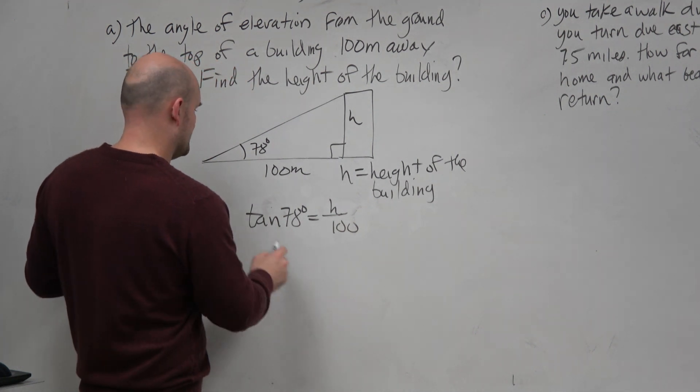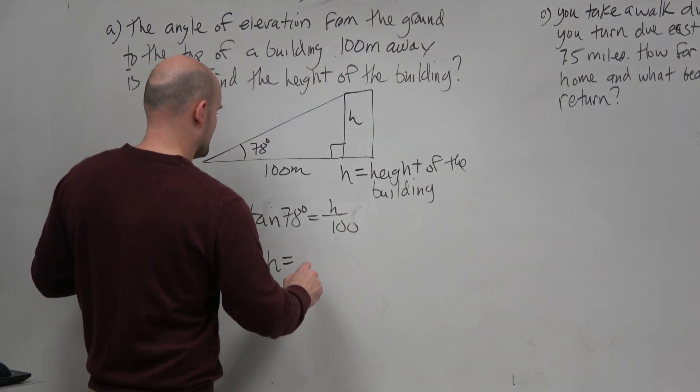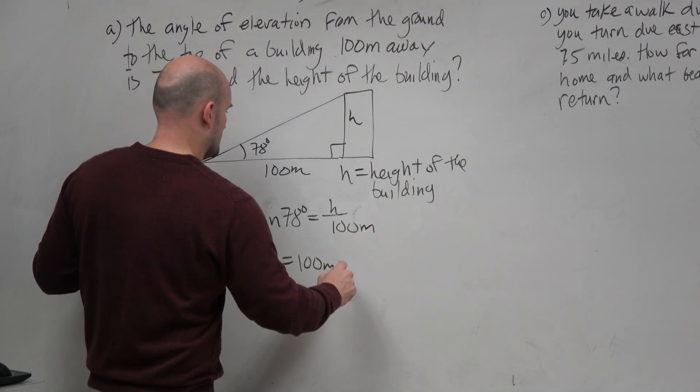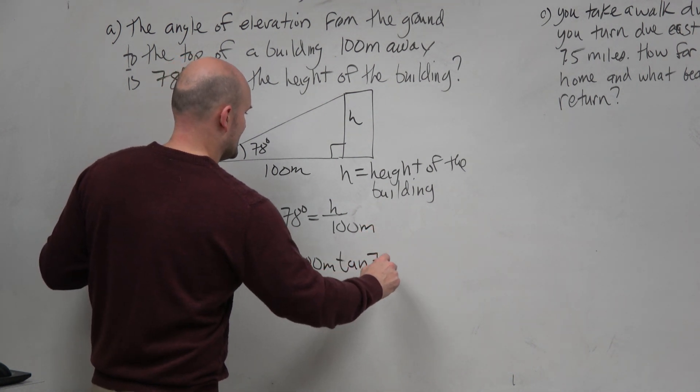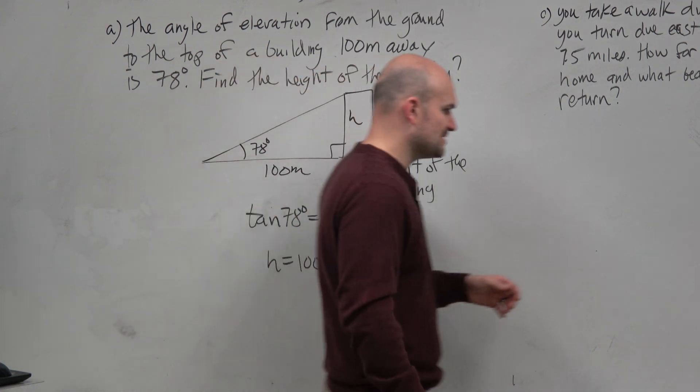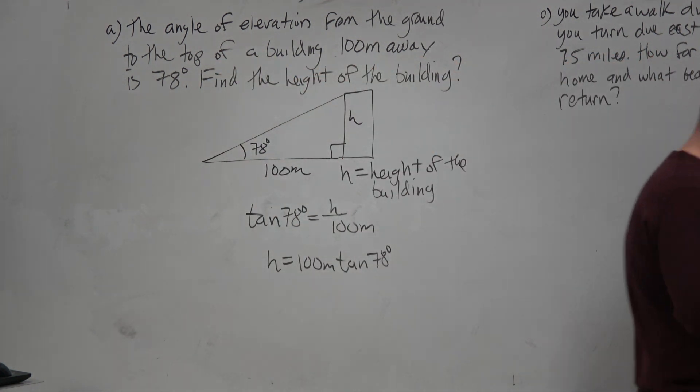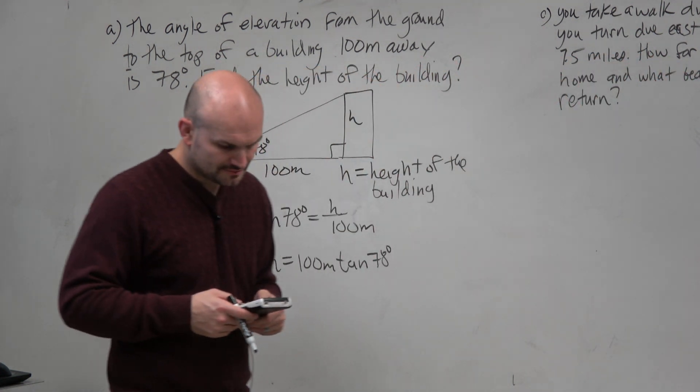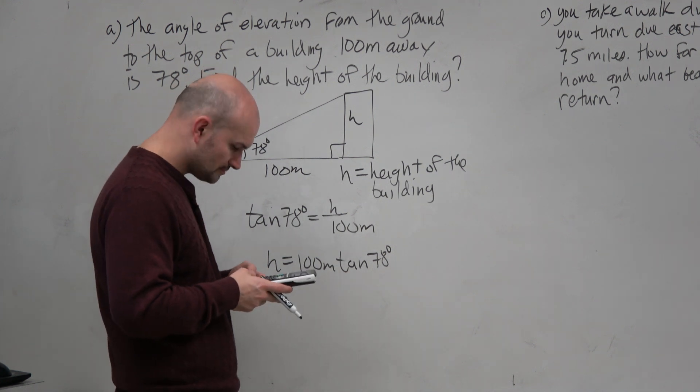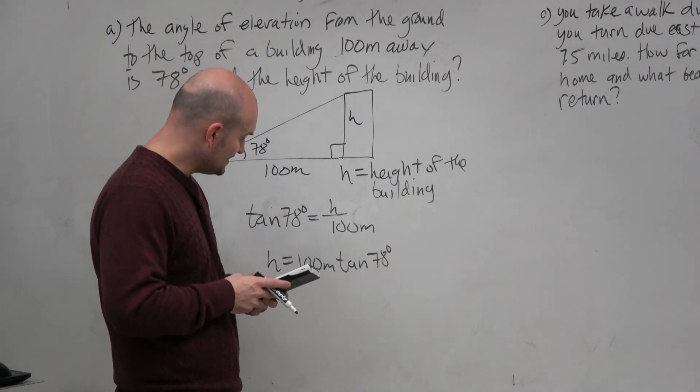Right? And then you could say H equals, I'm sorry, that's meters, times the tangent of 78 degrees. So again, just make sure when you're typing that into your calculator that you have your calculator set in degree mode and do 100 times the tangent of 78.